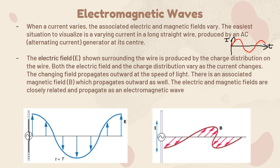Key properties of electromagnetic waves: the electric field E and the magnetic field B are perpendicular to each other — at 90 degrees. They travel at the speed of light regardless of the medium, because electromagnetic waves do not need any medium to travel through at all.